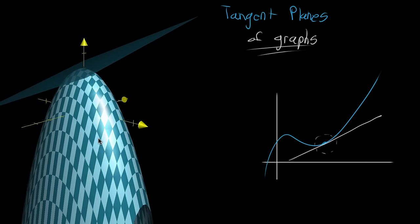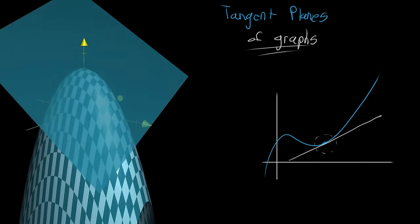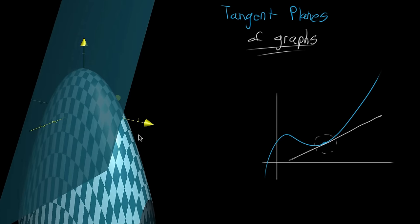And it could be at various different points. Rather than just being at that point you could kind of move it around and say that okay, it'll just barely be kissing the graph of this function, but at different points.